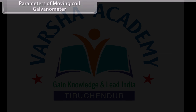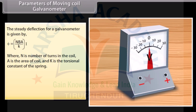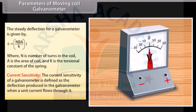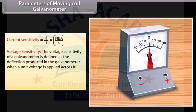The steady deflection for a galvanometer is given by phi = (NBA / K) × I, where N is the number of turns, A is the area of the coil, and K is the torsional constant of the spring. Current sensitivity is defined as the deflection per unit current: phi / I = NBA / K. Voltage sensitivity is phi / V = NBAI / KV.